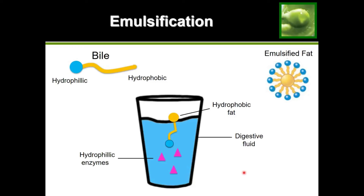To recap: fats cannot be digested until they have been emulsified. Emulsified fat has a hydrophilic outer layer. The bile required for this emulsification is not found until we reach the small intestine, which means fat cannot begin its digestion until the small intestine. Emulsification is what allows fat to make contact with the enzymes.